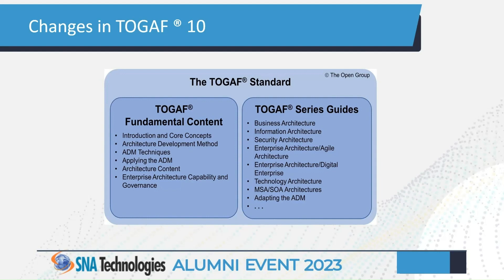The fundamental content includes: introduction and core concepts, architecture development method, ADM techniques, and applying the ADM architecture content — which consists of three things: the metamodel, the enterprise continuum, and the repository. The metamodel, enterprise continuum, and repository are part of the architecture content. Architecture capability and governance has been separated out as its own separate section.